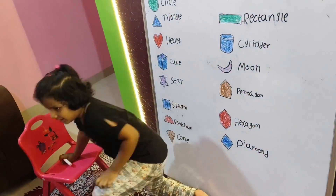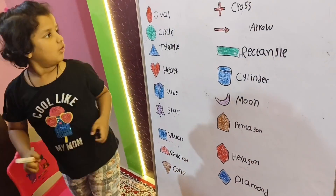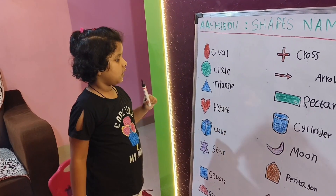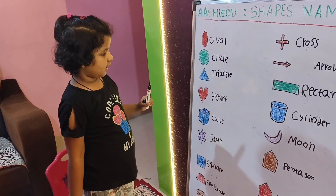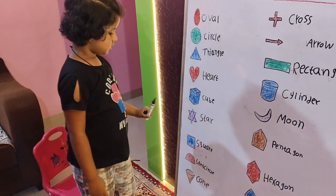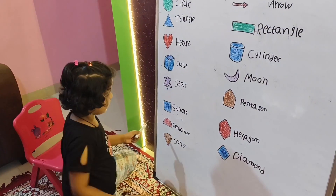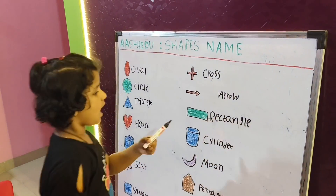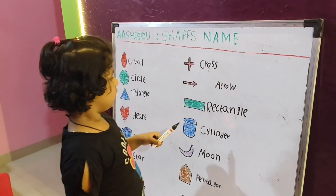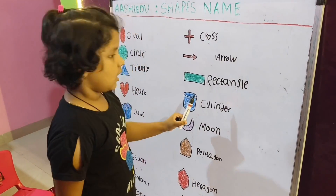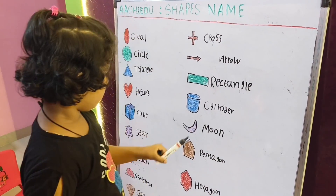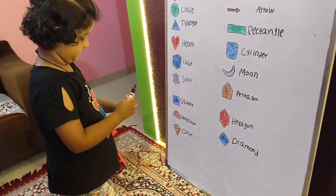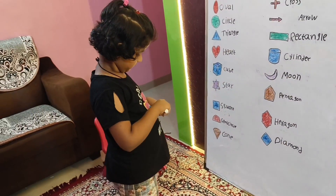Please tell me again. Circle, triangle, heart, cube, star, square, semi-circle, cone, cross, arrow, rectangle, cylinder, moon, pentagon, hexagon, and diamond. Well done, Aasi. Superb!